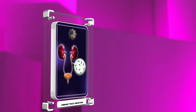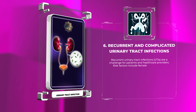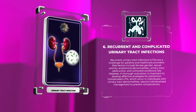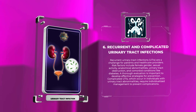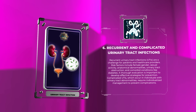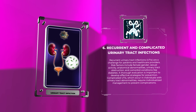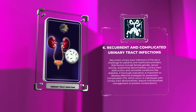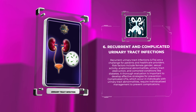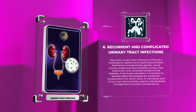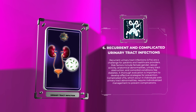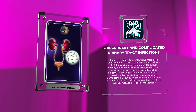Recurrent urinary tract infections are a challenge for patients and healthcare providers. Risk factors include female gender, sexual activity, anatomical abnormalities, urinary tract obstruction, and comorbid conditions like diabetes. A thorough evaluation is important to develop effective strategies for prevention. Complicated UTIs, which occur in individuals with urinary tract abnormalities, require individualized management to prevent complications.